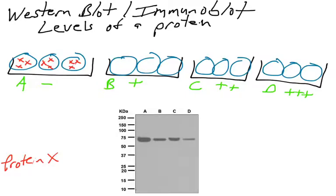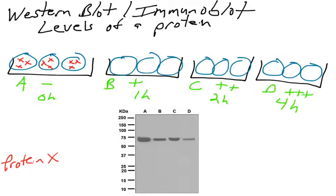You'll typically see lots of different samples processed in a Western blot. For example, you can add increasing concentrations of a drug, so B, C, and D would have increasing concentrations. Or you could add the same concentration of drug to all plates but collect samples at different time points — A is zero hours, B is one hour, C is two hours, D is four hours — to track the change in protein X over time.